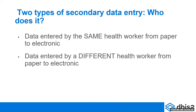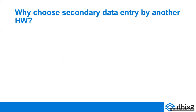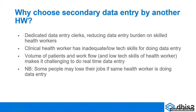Now, there are two types of secondary data entry, depending on who does it. You can have the data entered by the same health worker who wrote the information on paper, or you can have data entered by a different health worker who enters from paper to electronic — what we often refer to as data managers or data clerks. So why would you choose secondary data entry by another health worker? That enables you to have dedicated data entry clerks, and that helps to reduce the data entry burden on the skilled health worker.